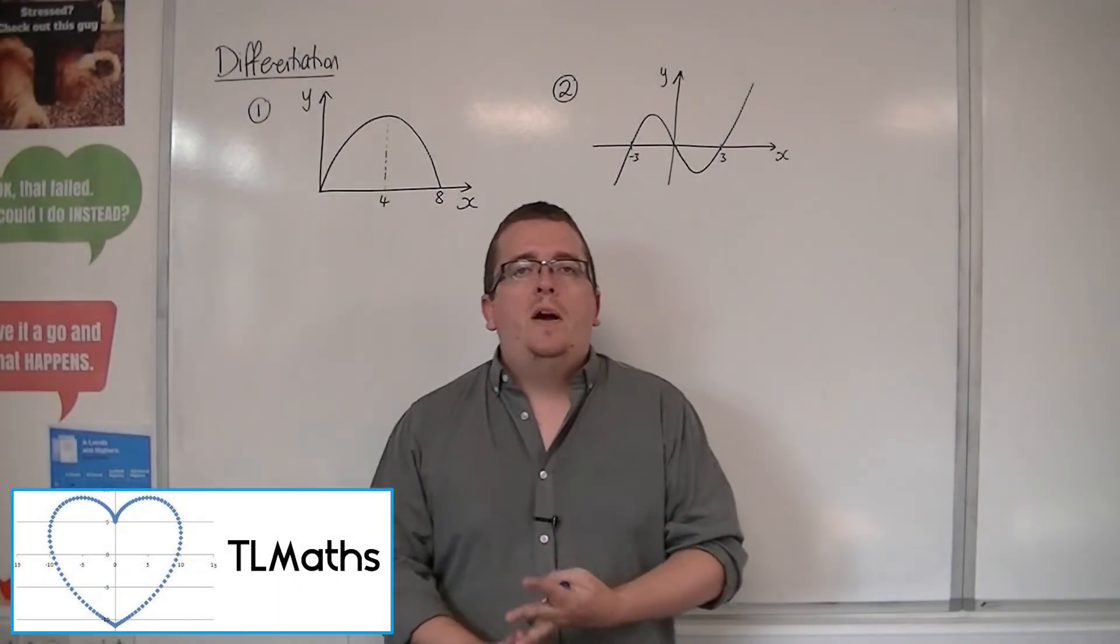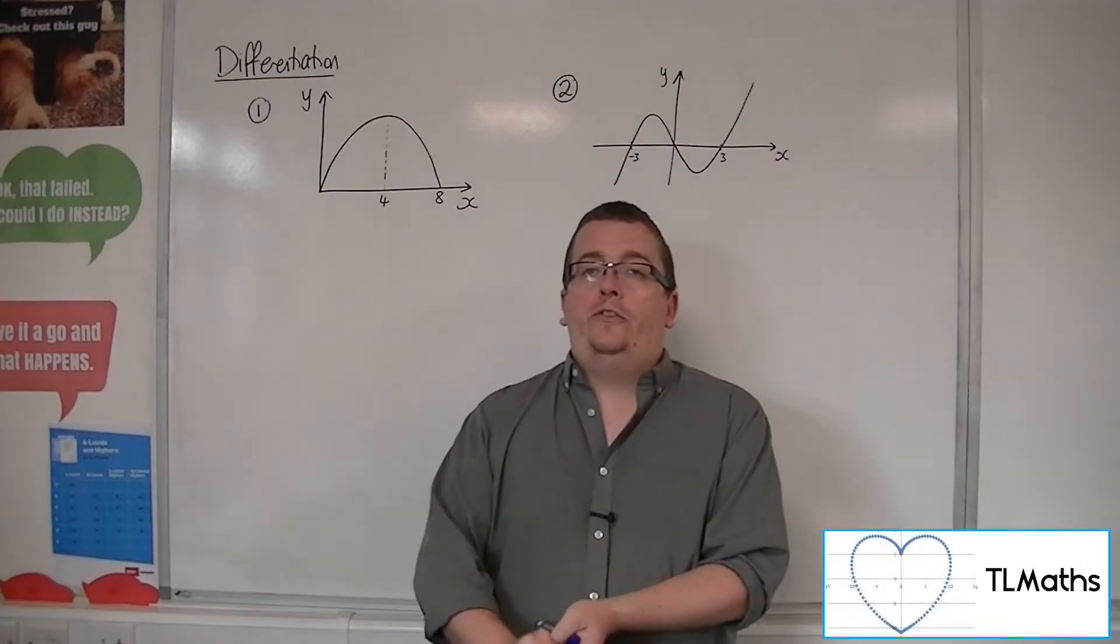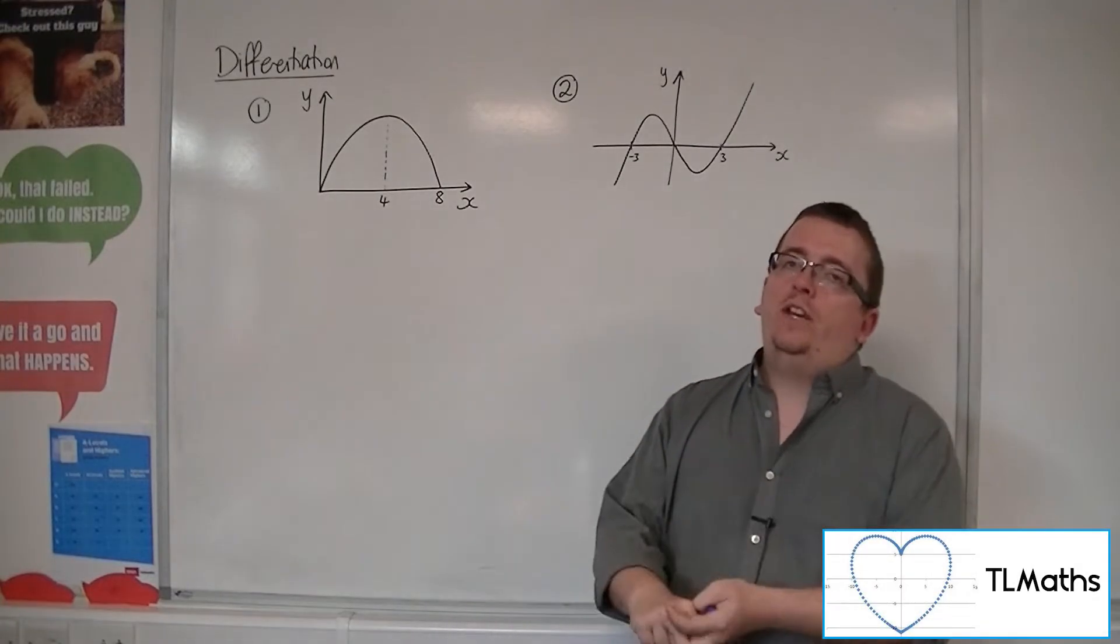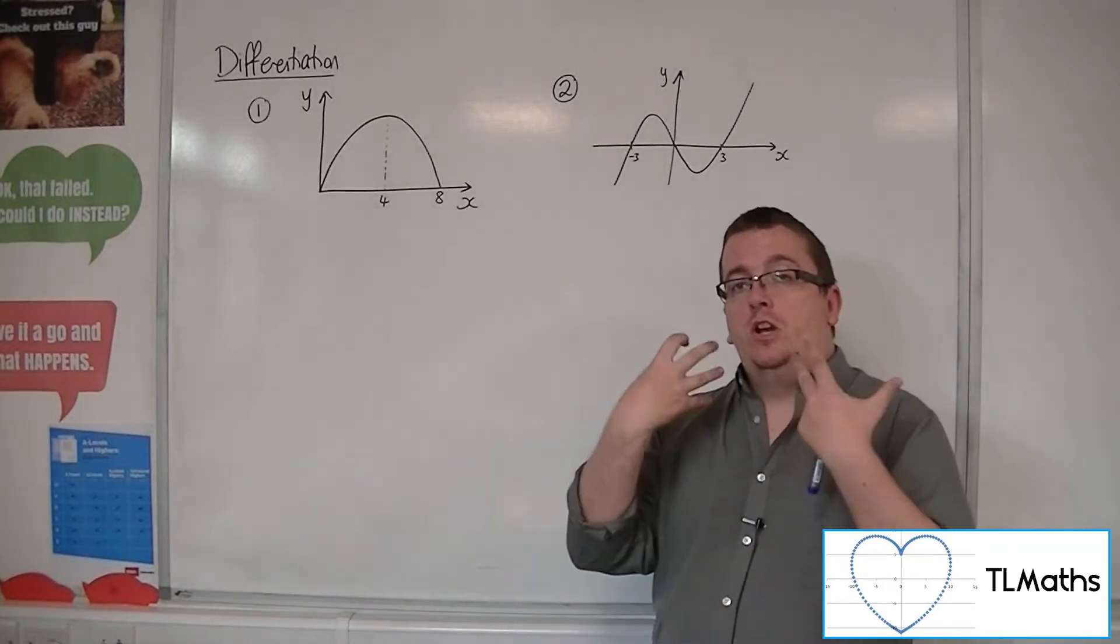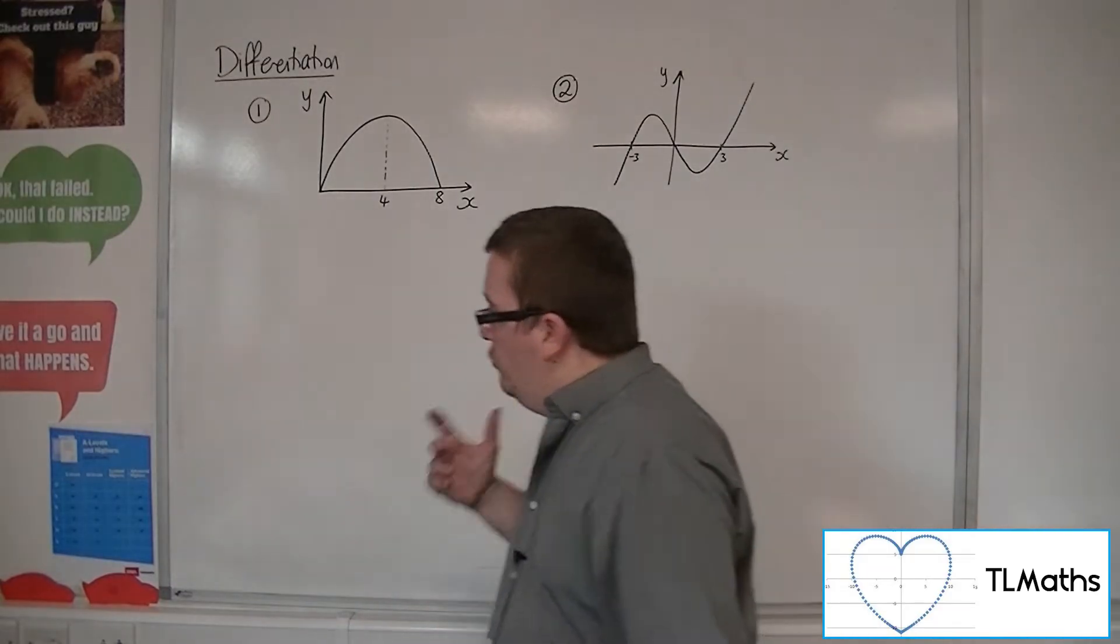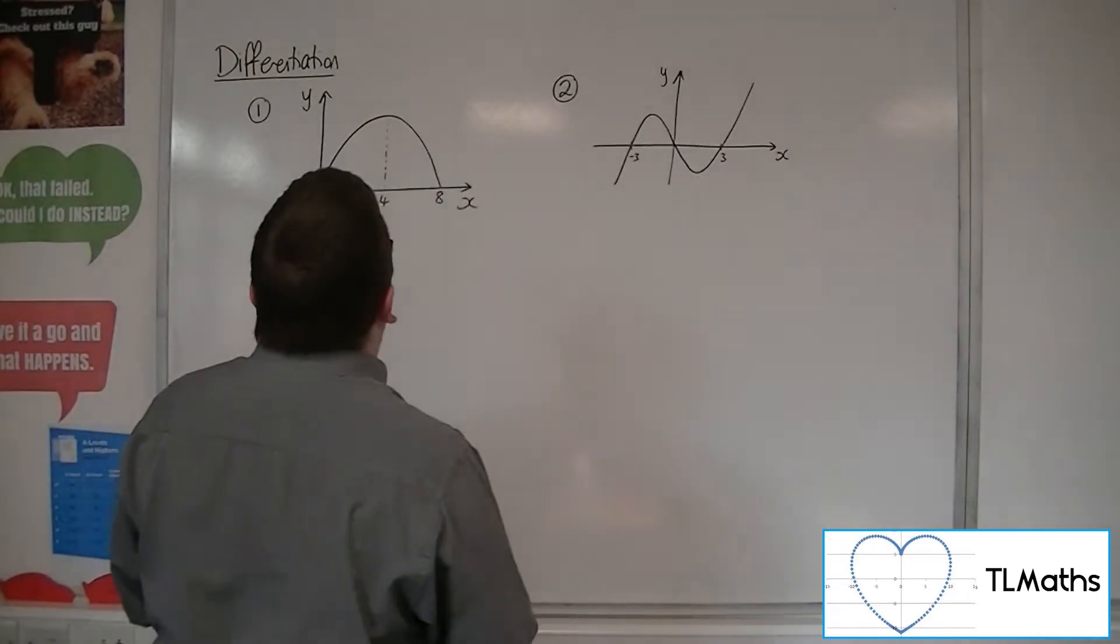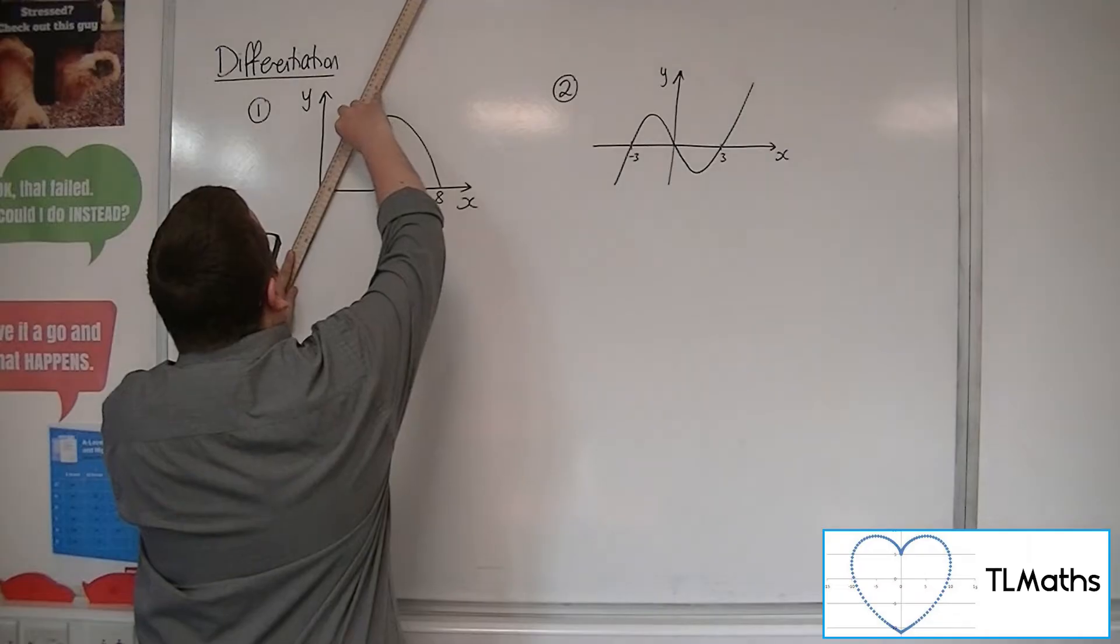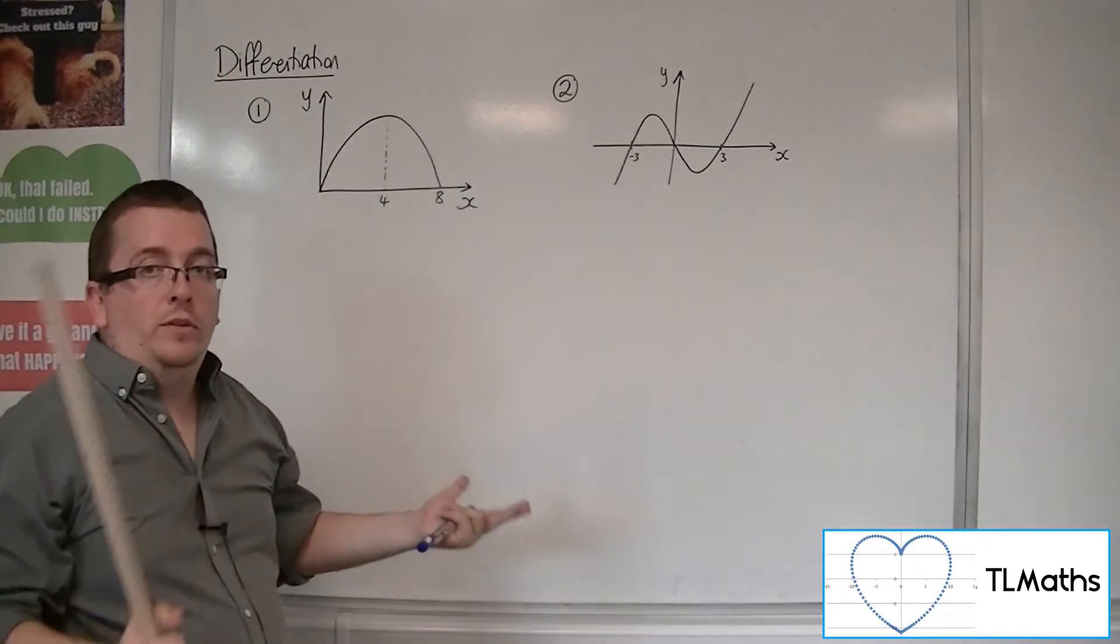Now remember, dy by dx, otherwise referred to as the first derivative, represents the rate of change of y with respect to x. The rate at which y is changing. So really, the derivative, when we find it, will be the gradient of the tangent to the curve at any point.